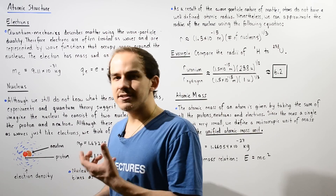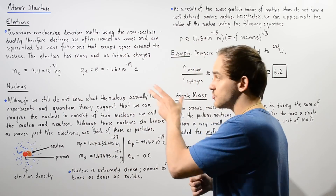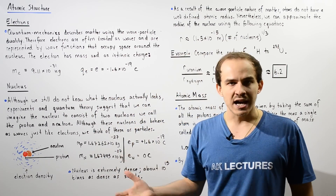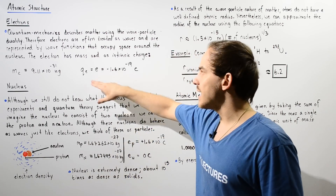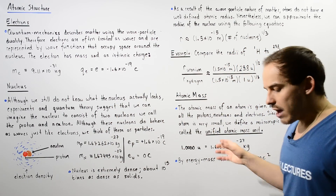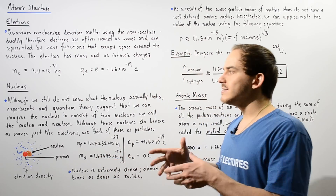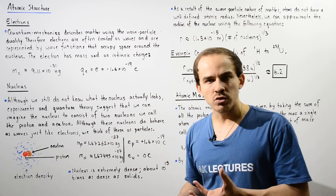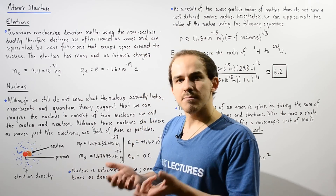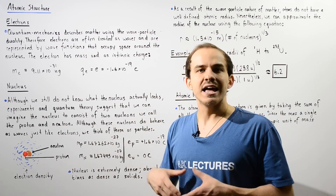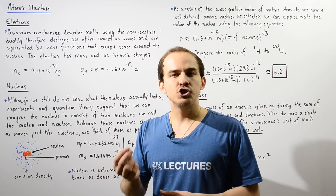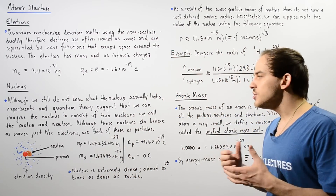Every electron has certain intrinsic properties known as mass and charge. Every electron has a mass of 9.11 times 10 to the negative 31 kilograms and a charge of negative 1.6 times 10 to the negative 19 coulombs. Now let's move on to the subatomic entities that exist within a region we call the nucleus. Even though we still do not know what the nucleus of our atom actually looks like, experiments and quantum mechanical theory suggest that we can imagine the nucleus to consist of two subatomic entities we call the nucleons.